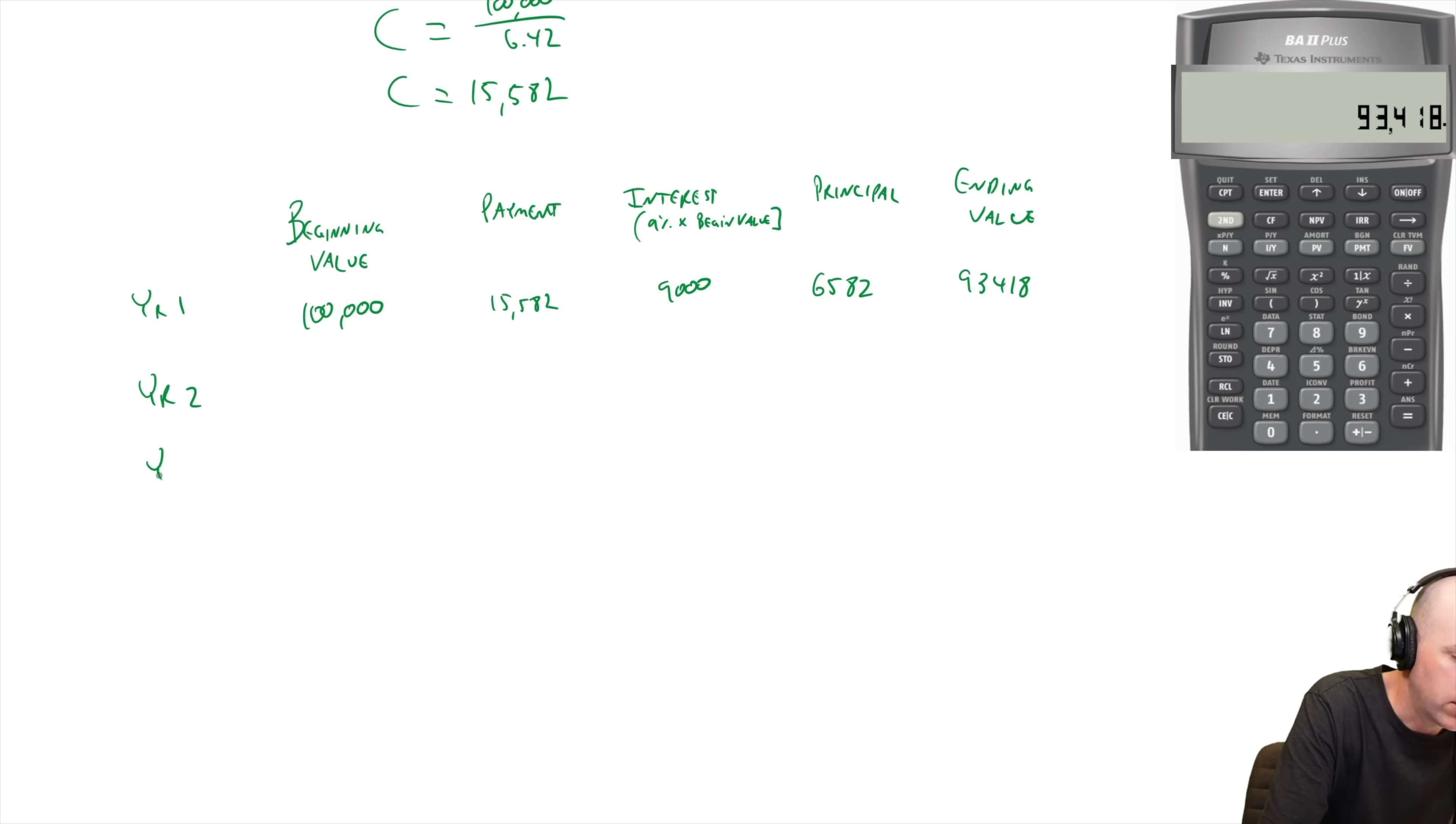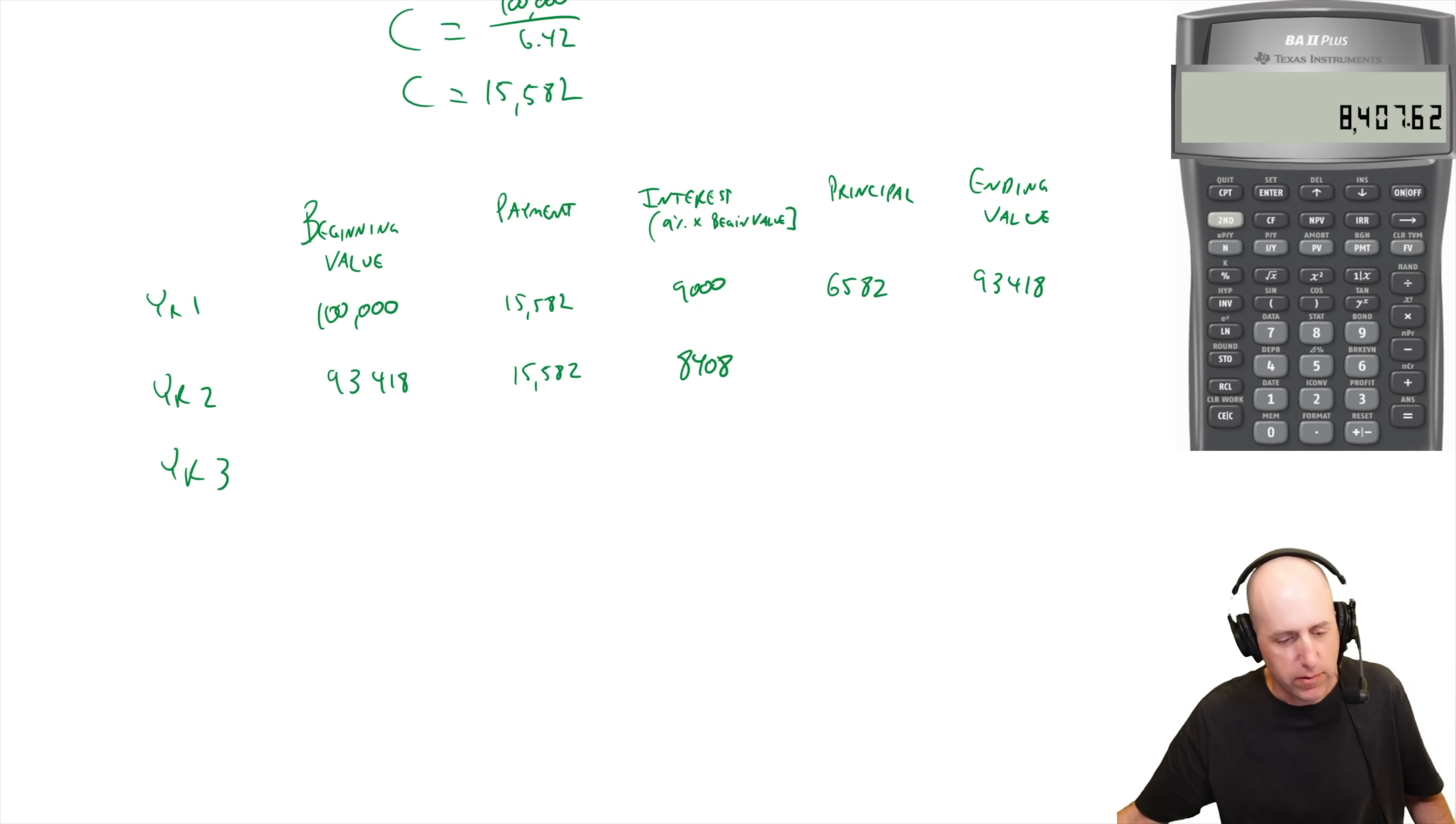We were asked to do three years. Now there are 10 years, but we're just going to do years two and three. We start year two with what we ended year one with, 93,418. We make another payment. The payment's always the same, 15,582. Our interest is 9% of the beginning value, 9% of 93 grand this time. So it's times 0.09. It's 8,408.